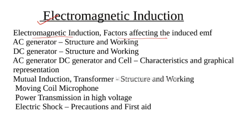The third chapter is Electromagnetic Induction. The AC generator is covered — its working and structure — along with the DC generator and its structure. We also cover the difference between AC and DC in terms of their parts.